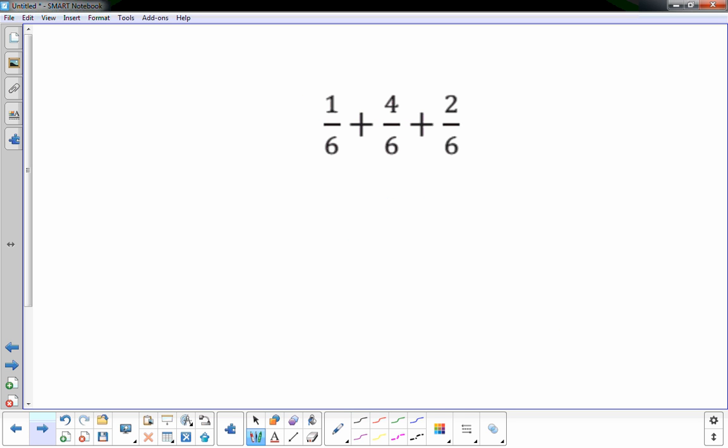Next problem: 1/6 plus 4/6 plus 2/6. Well, I'm going to try this without drawing a sketch. I know that the 6 is going to stay the same. The denominator stays the same, and all you really need to do is add the numerators. So if I add 1 plus 4 plus 2, I get 7. Now 7's greater than 6, so I could think about this in some parts.